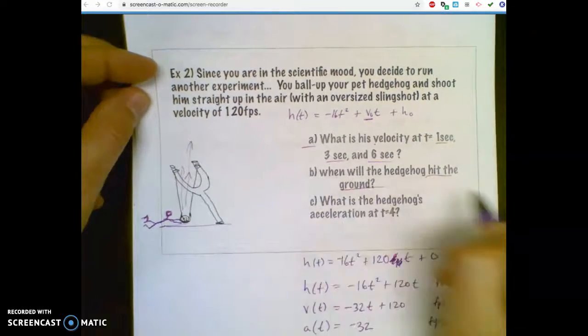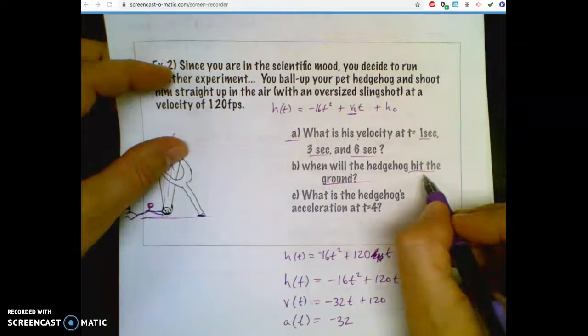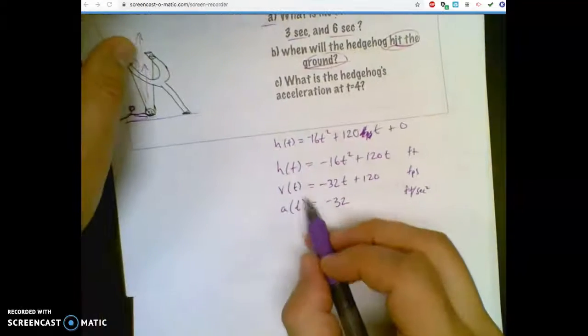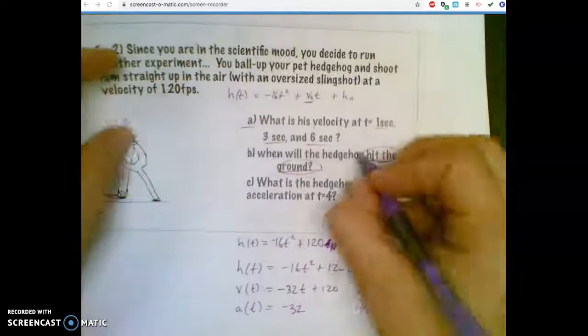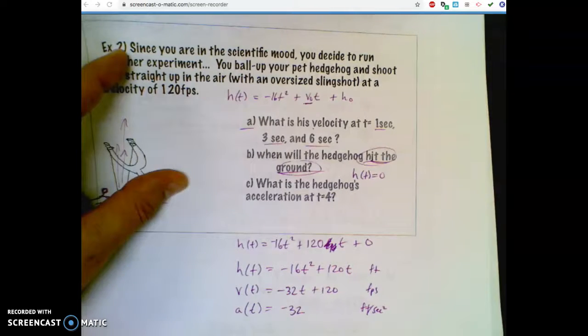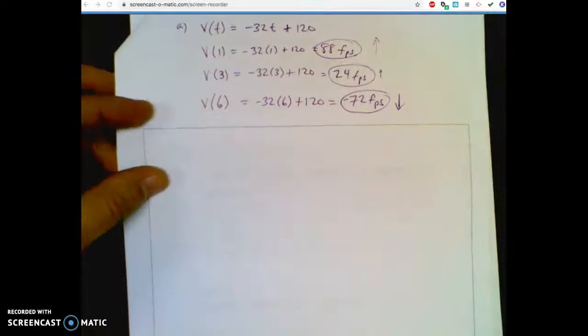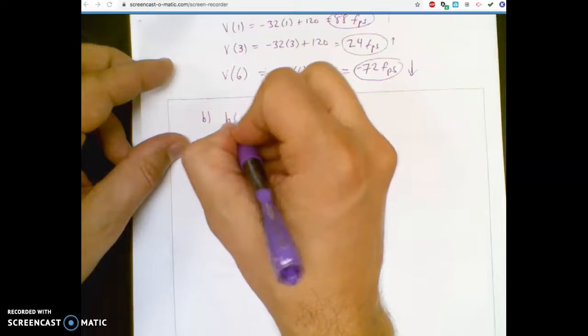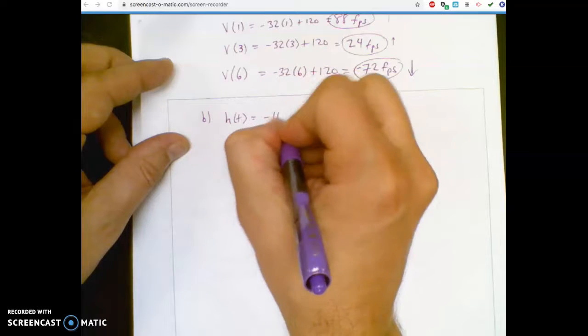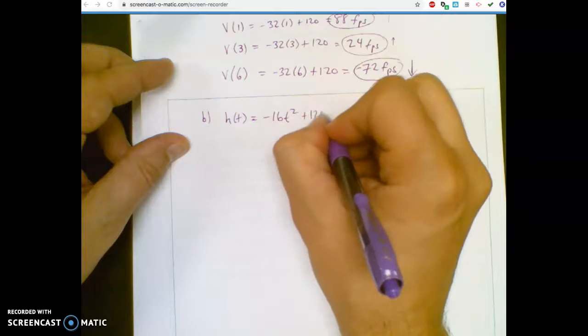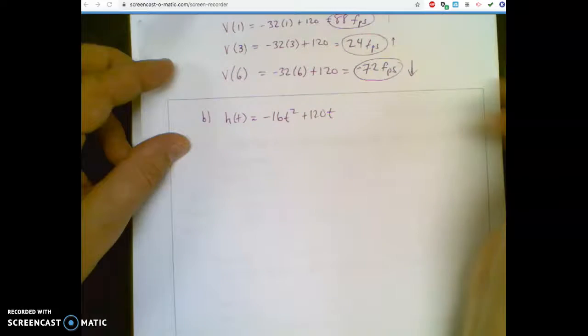When will it hit the ground? When I see hit the ground, I have to know in my head, oh man, what's that mean? Does it deal with height, velocity, or acceleration? When I say hit the ground, to me, it means when height equals zero. It's a pretty classic question. So part B is hit the ground. So height, so I need my height equation, which was negative 16t squared plus 120t plus nothing.